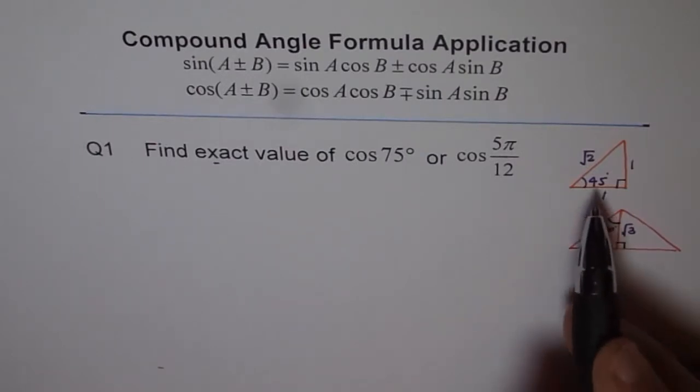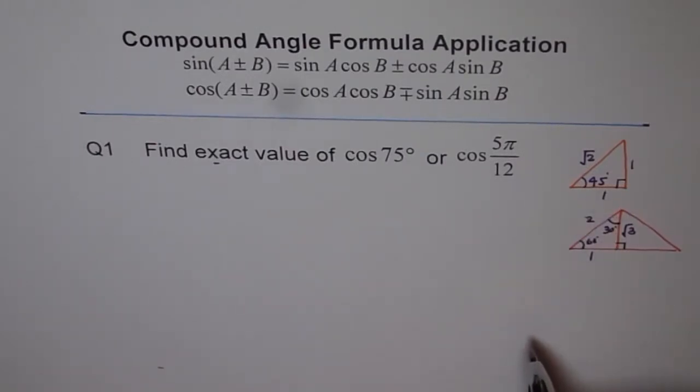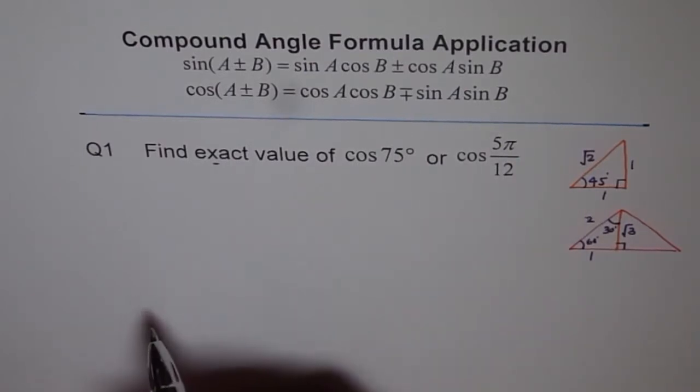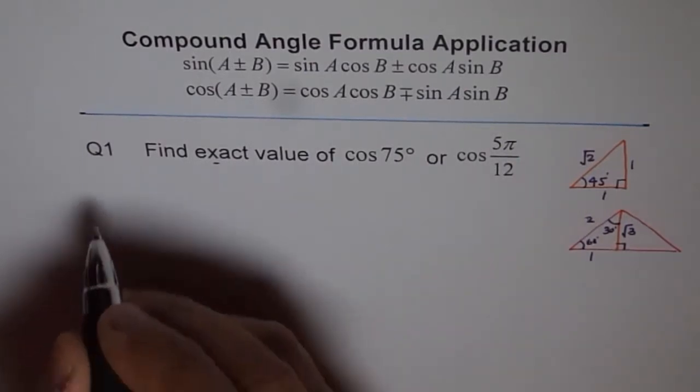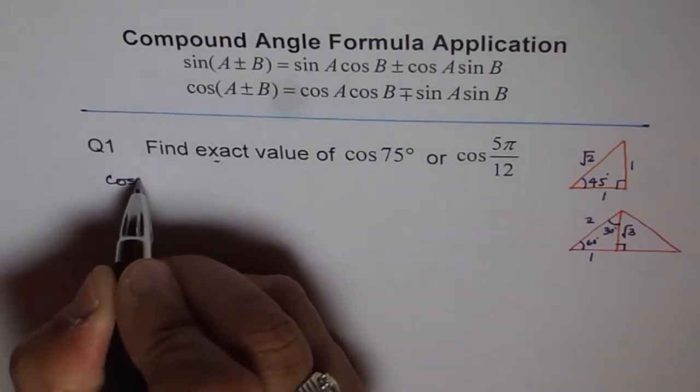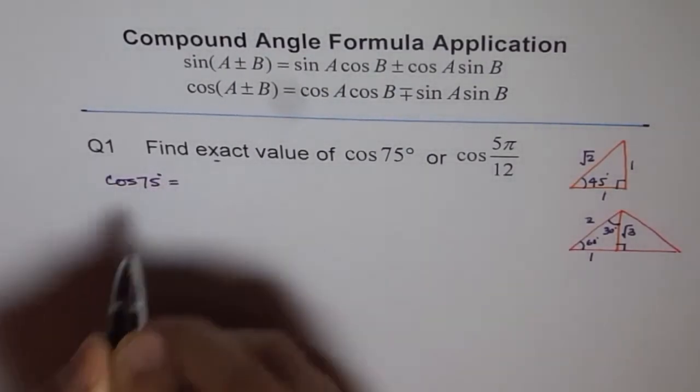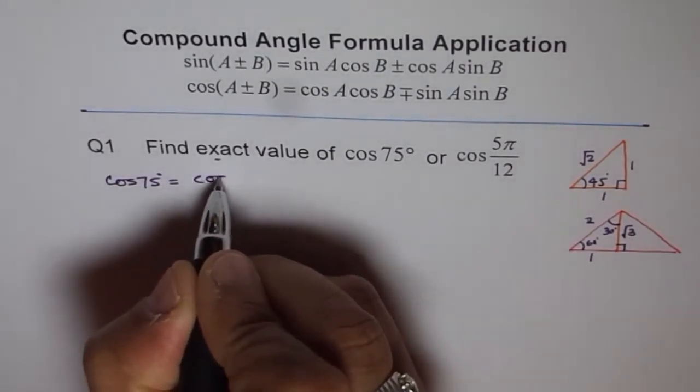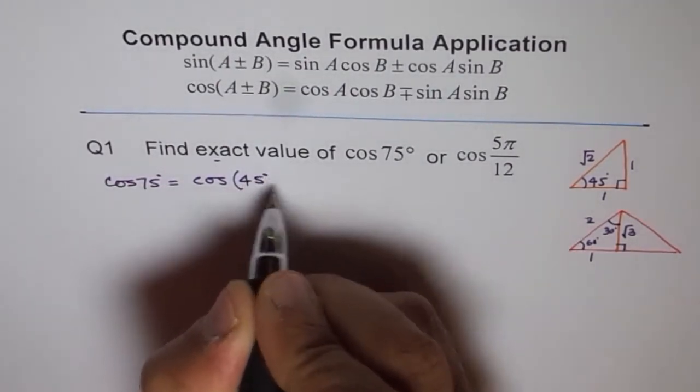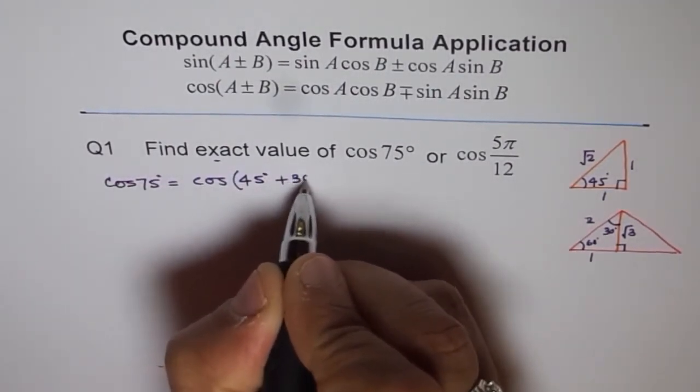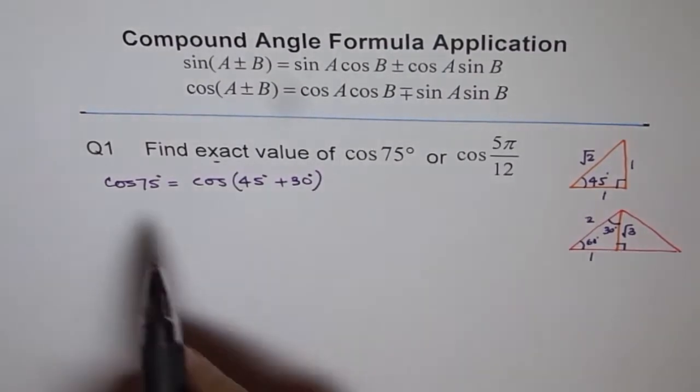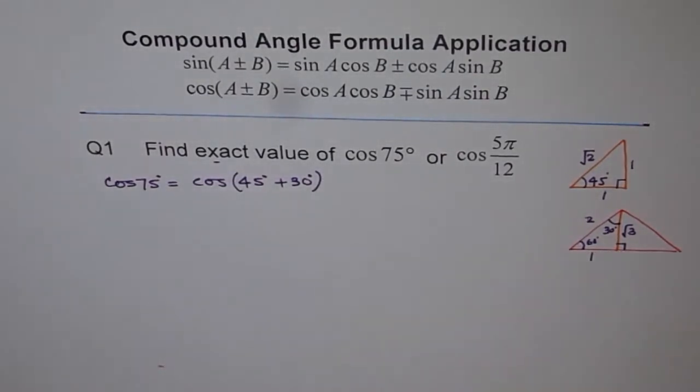Yes, of course. 75° is 45° plus 30°, correct? 45° plus 30° gives me 75°. And therefore, I can write this cos 75° as equal to cos(45° + 30°). That is, cos of 75°. Perfect.